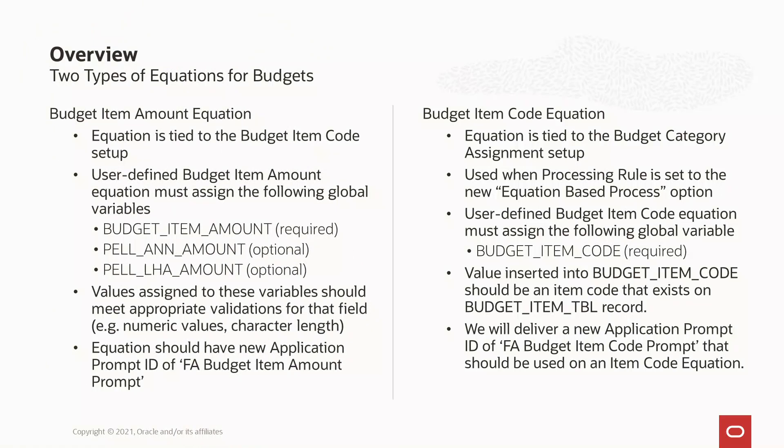This update incorporates two types of equations in the budgeting process. The first type of equation is a budget item amount equation. This equation is associated to the budget item code setup as a user-defined equation to determine the values assigned to the budget item amount, PEL annual amount, and PEL less than half annual amount.